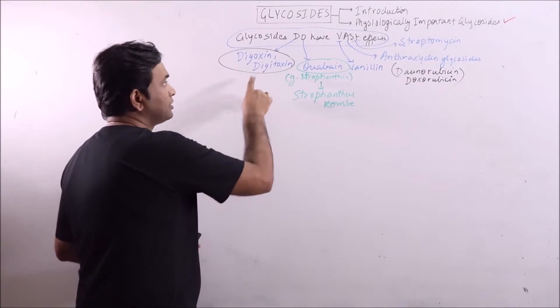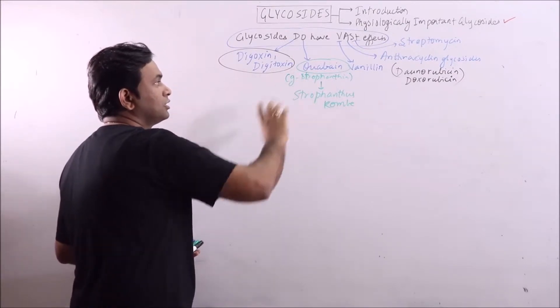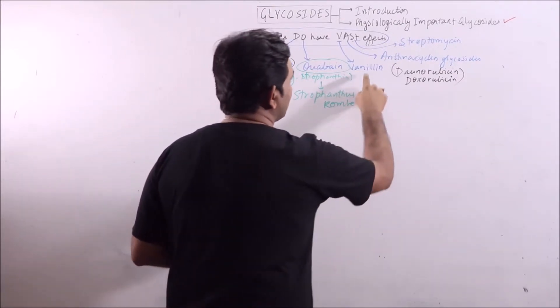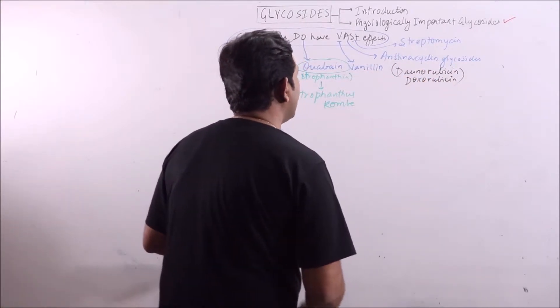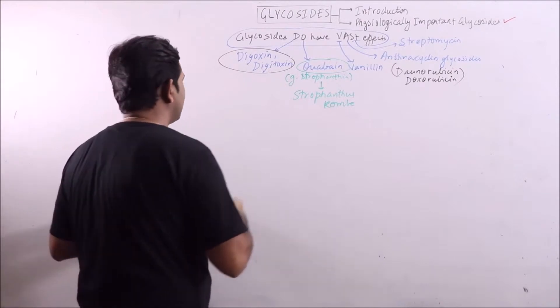In the previous lecture we have discussed about digoxin, digitoxin and ouabain. In this video we will discuss about vanilla or vanillin, anthracycline glycosides and streptomycin.